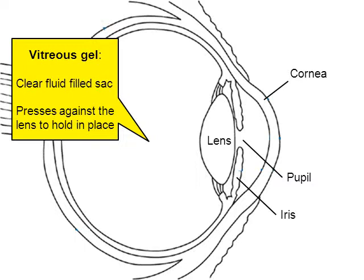One of the purposes of the vitreous is that because it's filled with liquid, it has pressure to it. It pushes against the lens and helps hold the lens in place. Because the vitreous is a fluid-filled sac, it adds some of the pressure of the eye. Let's keep moving to the back of the eye.